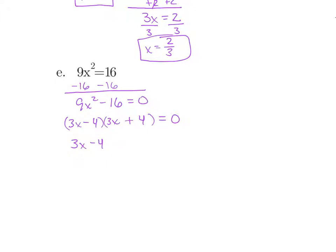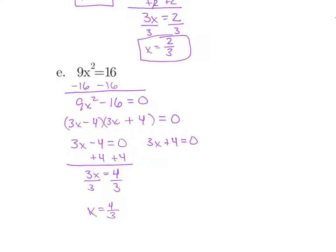We have that this equals zero, so now we set each factor equal to zero. Do we have to do both? Yes, because even though they're very similar, they are not exactly the same. So we have 3x minus 4 equals 0 and 3x plus 4 equals 0. For the first: add 4 to both sides to get 3x equals 4, divide by 3 to get x equals 4 thirds. For the second: subtract 4 to get 3x equals negative 4, divide by 3 to get x equals negative 4 thirds. Those are my two solutions.